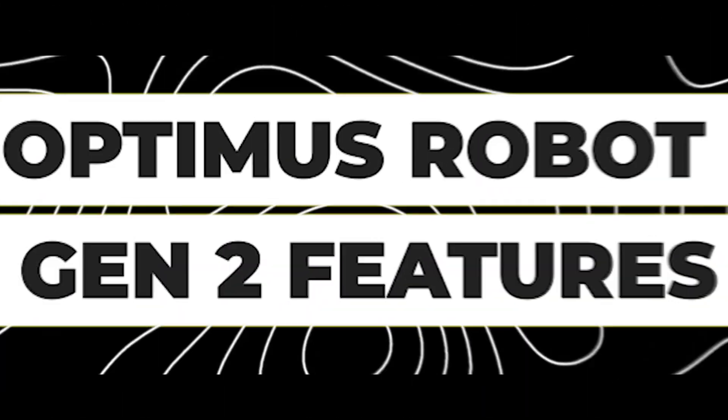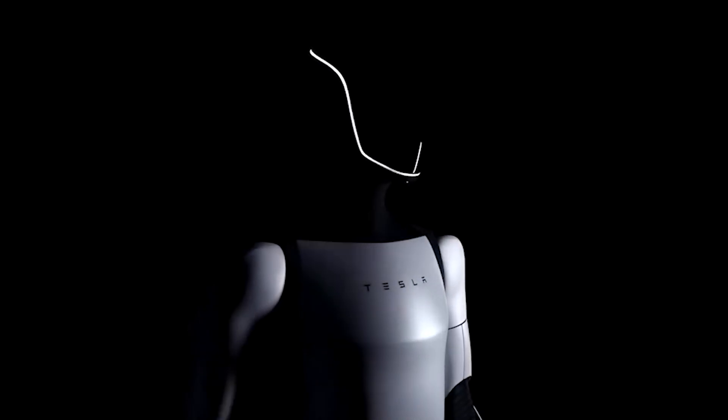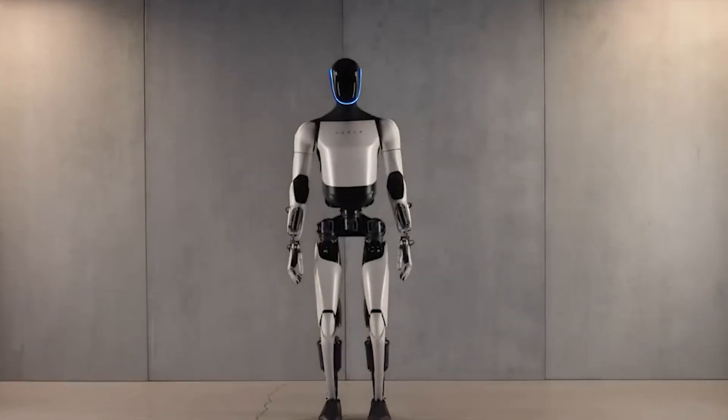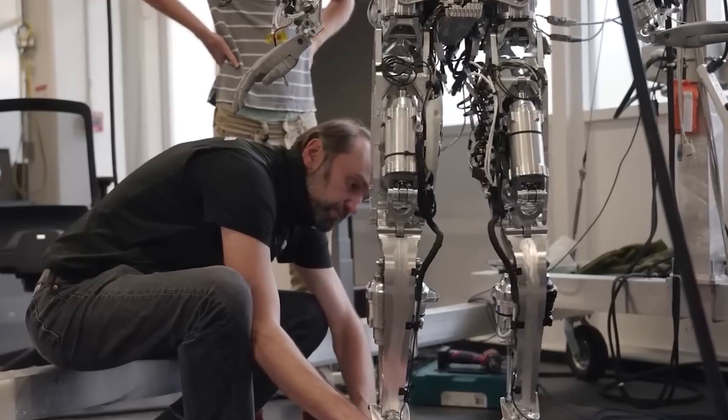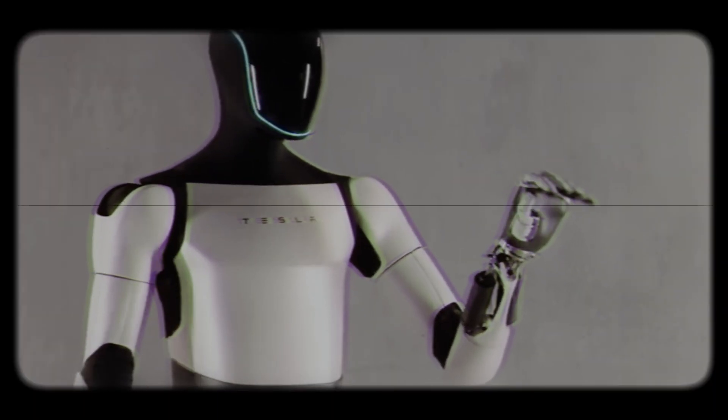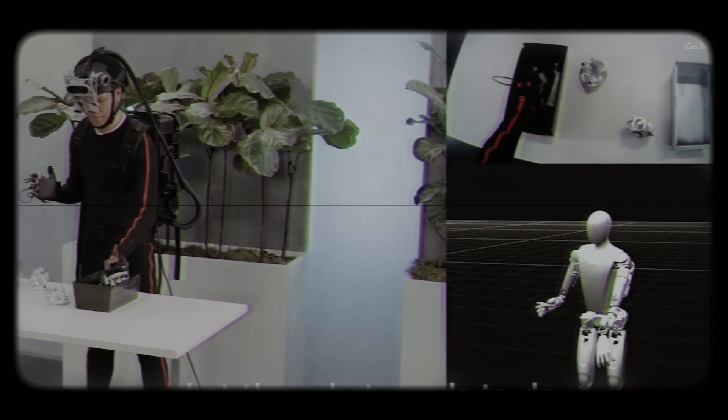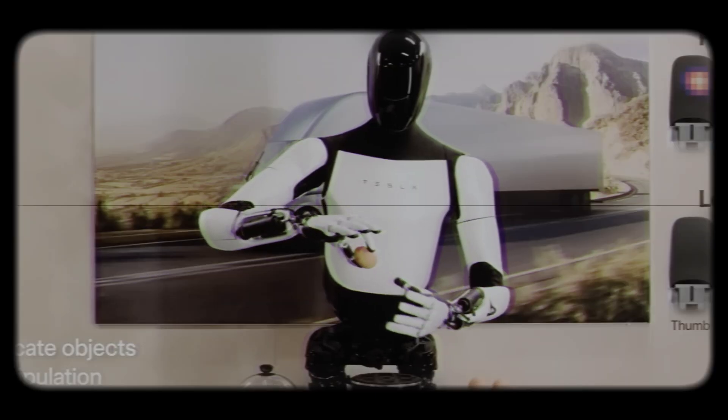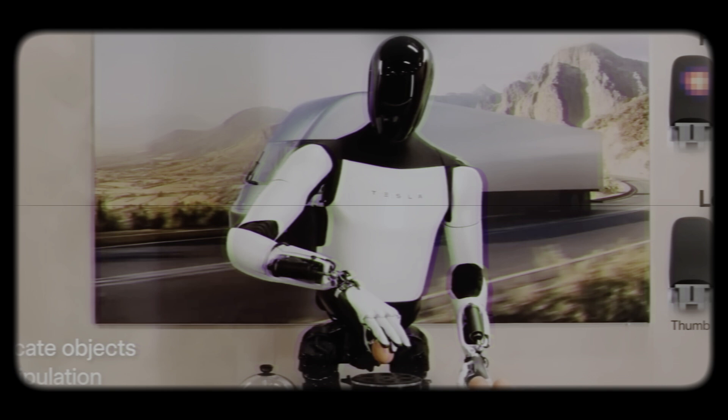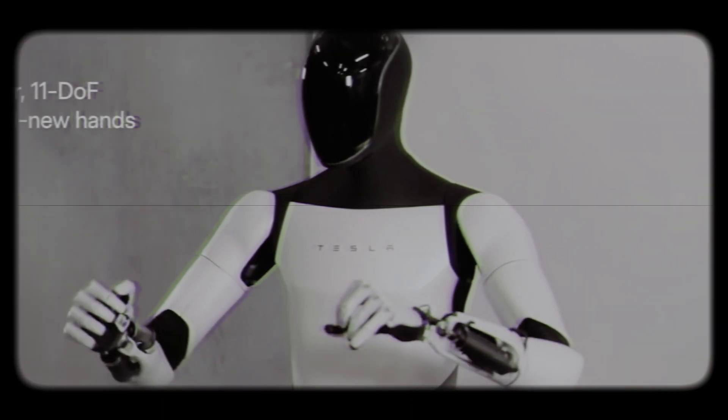Before delving into the intricacies of Optimus Robot Gen 2, let's take a moment to absorb the details presented in the official video released by the Tesla Optimus team. The video showcases the robot's newfound capabilities, including looking up and down with two degrees of freedom, delicately handling objects like eggs, and executing movements that mirror human-like dexterity.